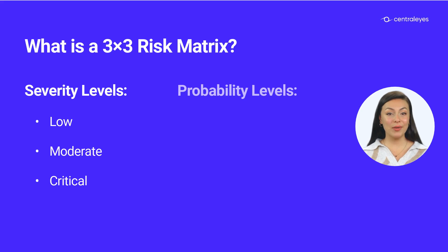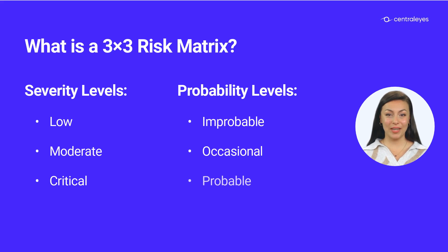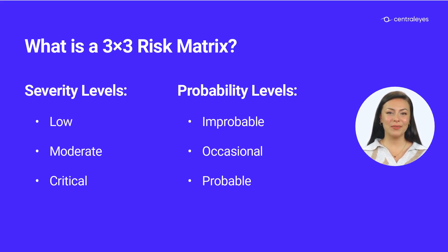Probability levels. Improbable: unlikely but possible to occur during standard operations. Occasional: likely to occur sometime during standard operations. Frequent: likely to occur often during standard operations. By multiplying the risk probability by its severity, you can calculate the level of acceptability of its risk.